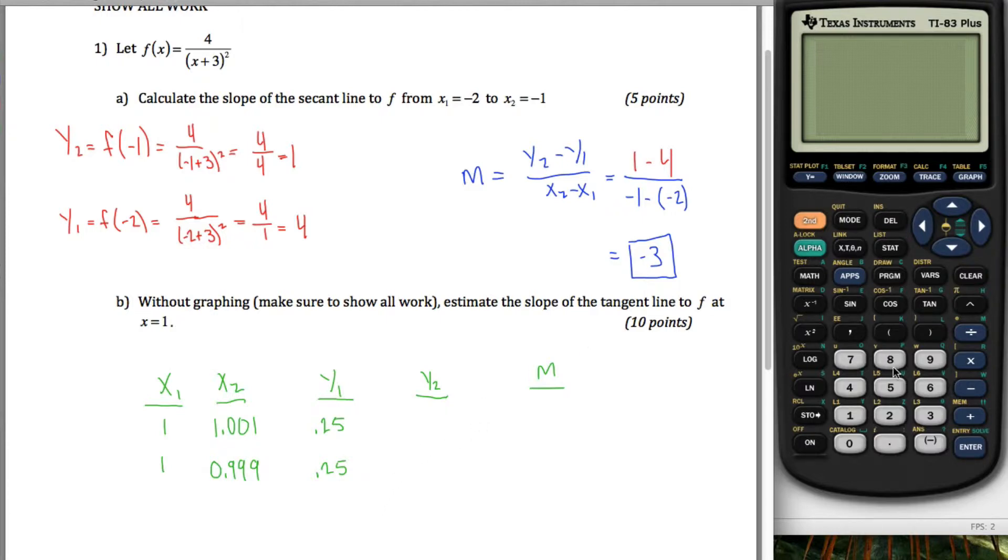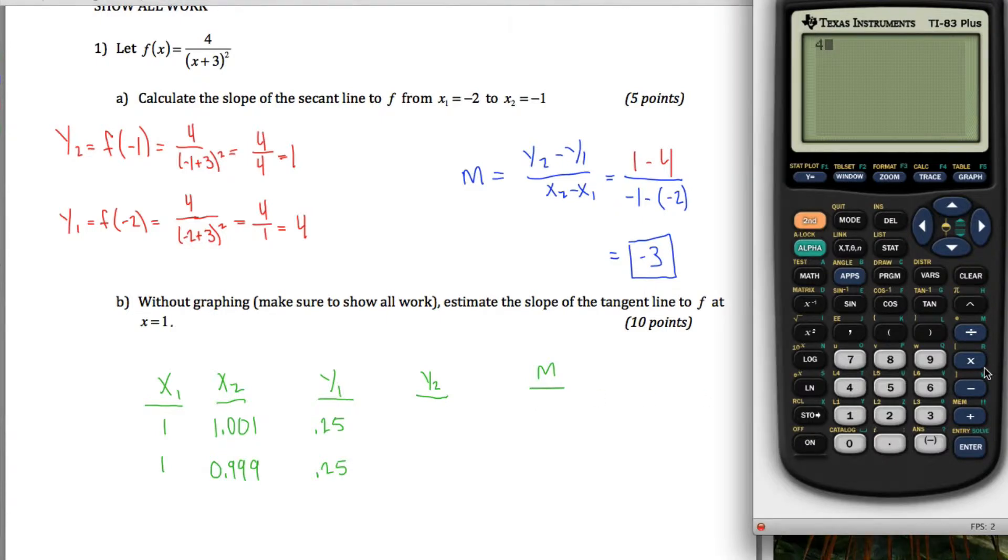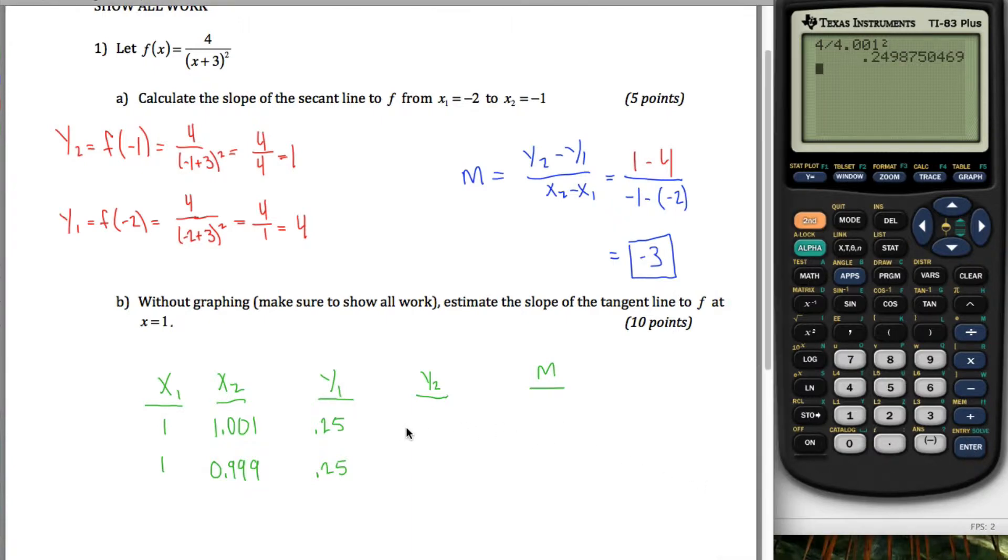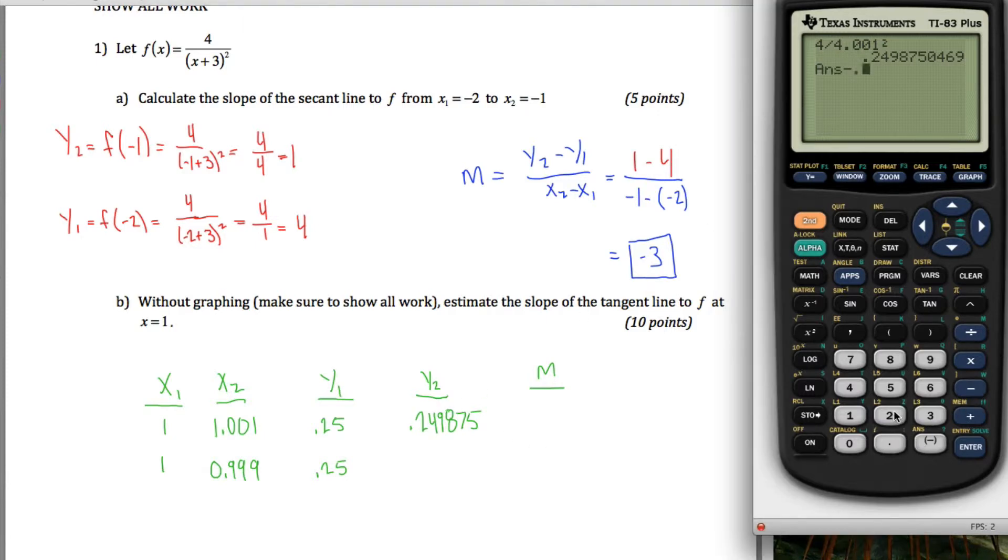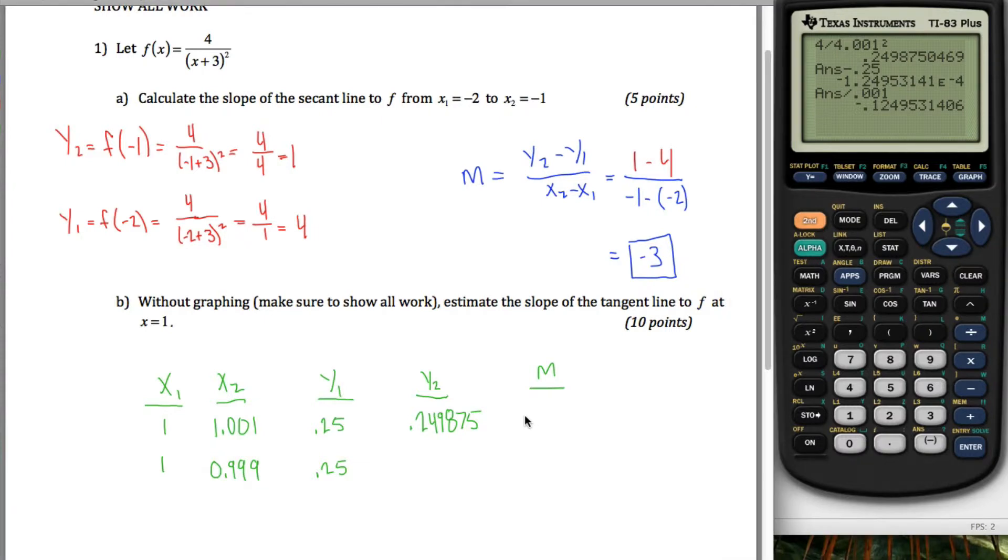But for y2, I'm going to have to pull up my calculator here, and so what I want for y2 is I want to figure out what is 4 divided by, and then 1.001 plus 3 squared. Well I can do that in my head, well at least part of it, 1.001 plus 3 is 4.001, and then I've got to square that thing, do 4 divided by it, and I get this .24 thing, 2, 4, 9, 8, 7, 5. And so now I can use my formula, I can do y2, this thing, minus y1, and I can divide that by x2 minus x1, note that that's just .001, and what I get is negative .12495 approximately.